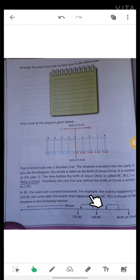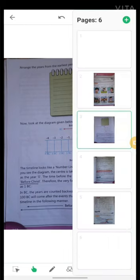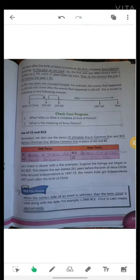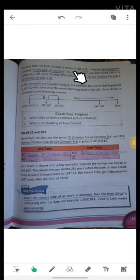For example, the events happening in 100 BC will come after the events that happened in 150 BC. This is shown in the timeline in the following manner. The time after the birth of Jesus is known as AD.